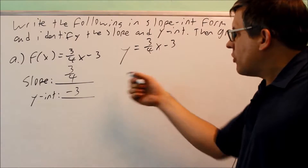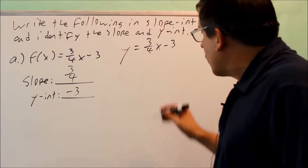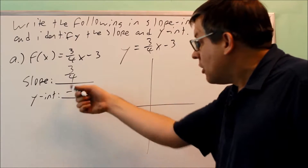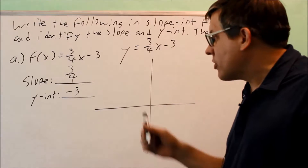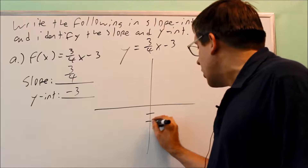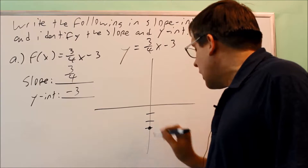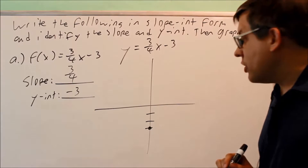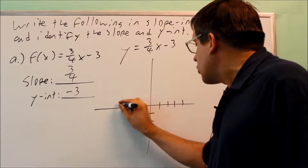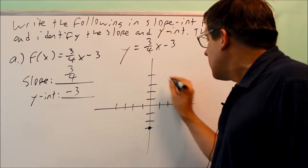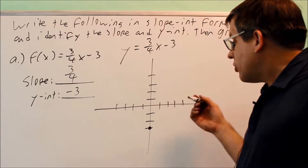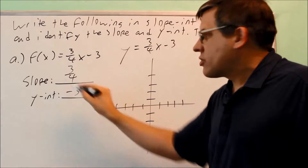Now we have to use this information to draw a graph. The first thing you want to do when you make a graph is start by plotting the y-intercept. The y-intercept is going to be an actual point on the line itself. We're going to go down three units and make a dot right there — that's where the graph is going to begin. You need at least one more point, and then you can connect those. To get that second point, we're going to use our slope.